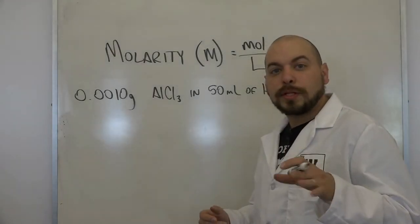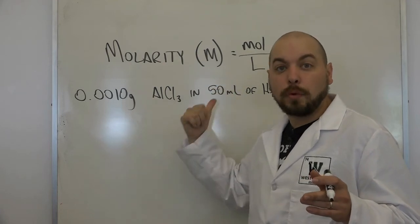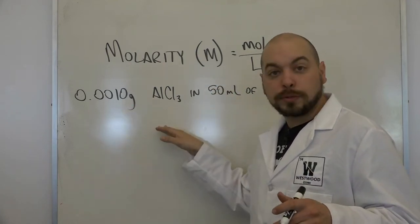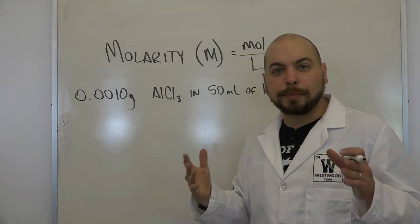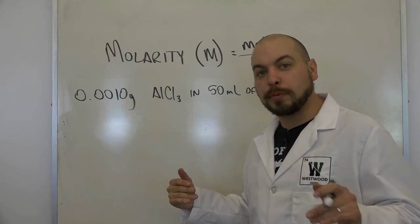All right, now that you've had a couple seconds to work through it, let's go ahead and work through it together. We're giving grams, and remember for molarity, we need moles. So we need to go from grams to moles. So we're going to initially divide by the molar mass of aluminum chloride, which is 133.35 grams per mole.